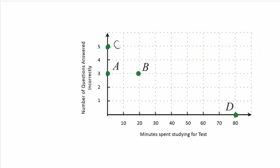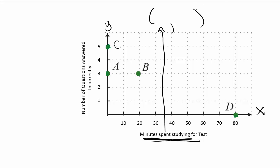One more example using a graph. Graphs are easy — don't overthink them. The X axis represents minutes spent studying for a test, and the Y axis represents the number of questions answered incorrectly. In any ordered pair from this graph, the first number is minutes studied and the second is questions wrong. Let's look at the ordered pair at point B.